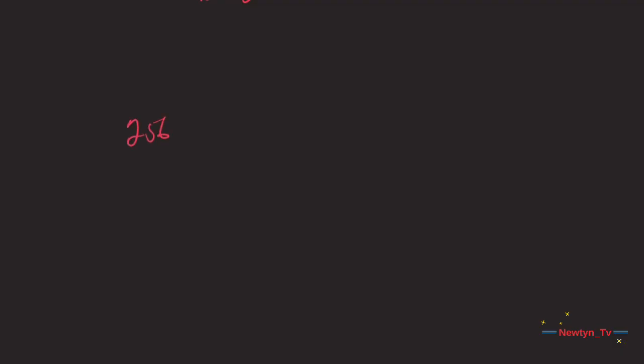Now let's talk about rewriting equations so all powers have the same base. Sometimes the common base for an exponential equation is not explicitly shown. In this case, we simply rewrite the terms in the equation as powers with a common base and solve using the one-to-one property. For example, if we have 256 equal to 4 exponent (x minus 5), we can rewrite both sides as powers of 2, then apply the rules of exponents along with the one-to-one property, and solve for x.